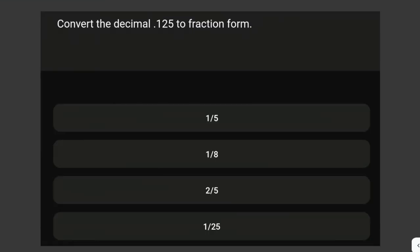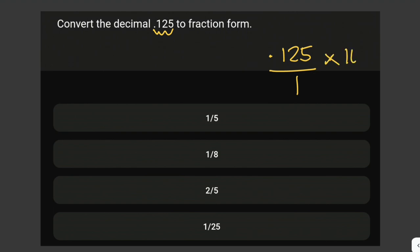Convert the decimal 0.125 to fraction form. To convert a decimal to a fraction, we write the decimal as itself divided by 1 — so 0.125 over 1. Then we multiply both the numerator and the denominator by 10 to the power of the number of digits after the decimal point. After the decimal point we have three digits, so we multiply both by 10 cubed.